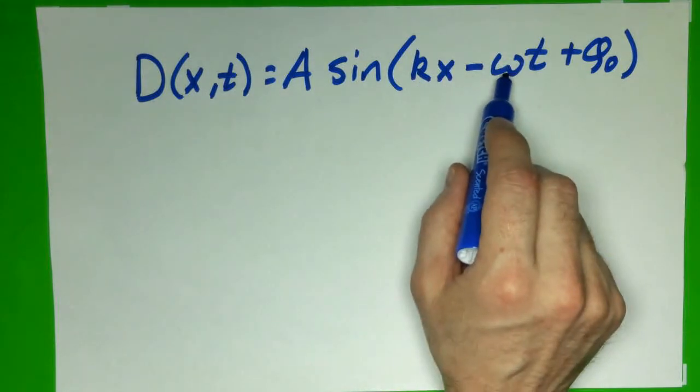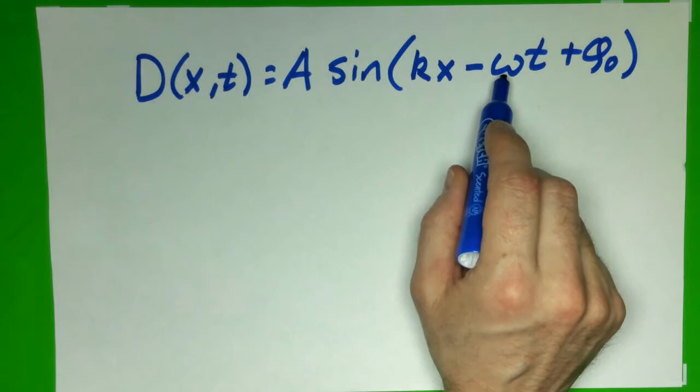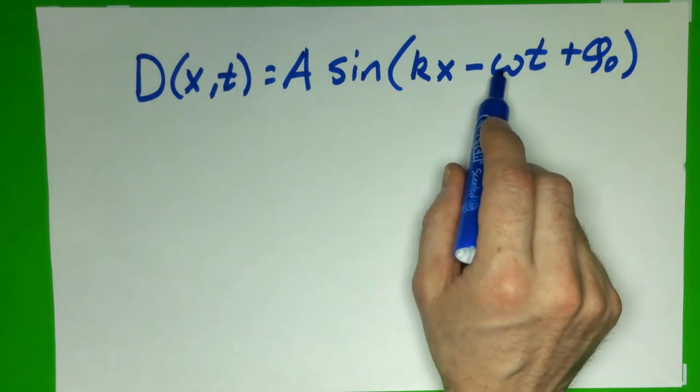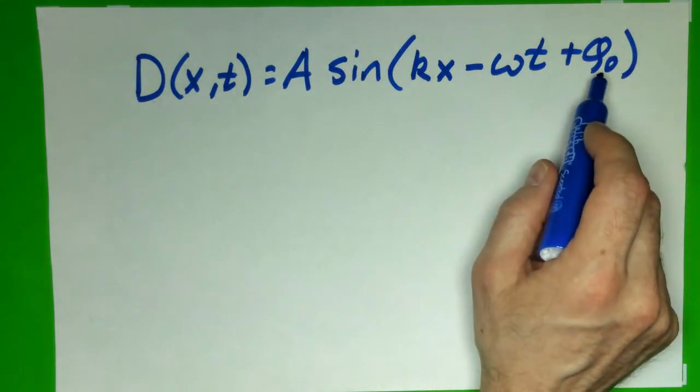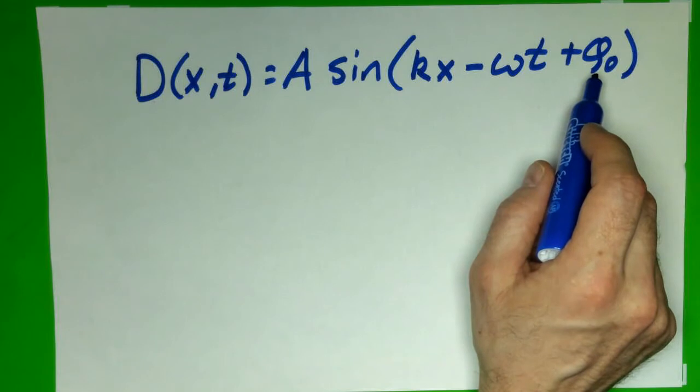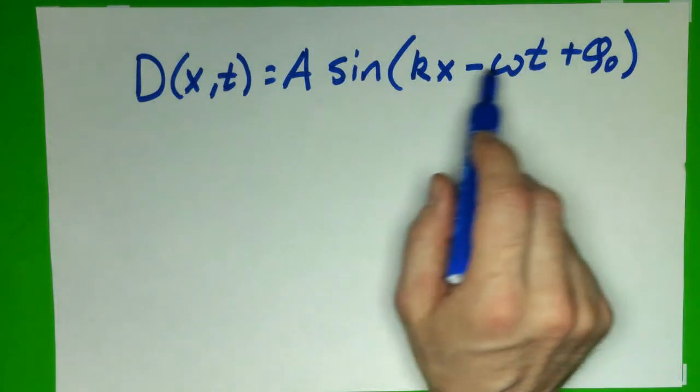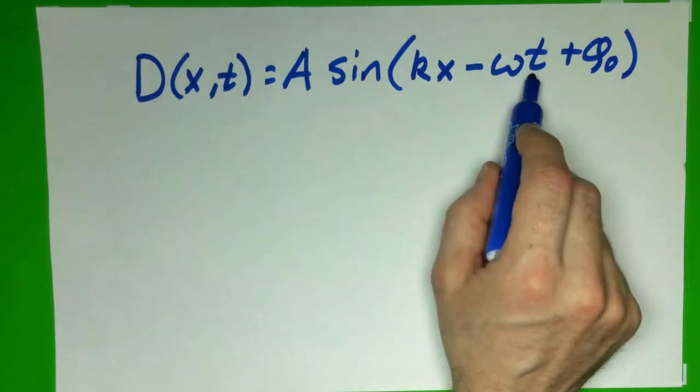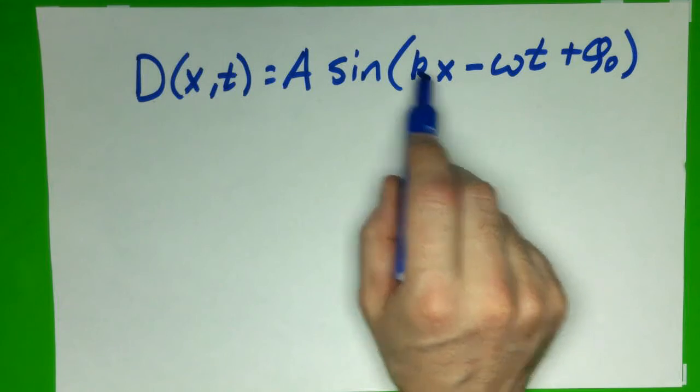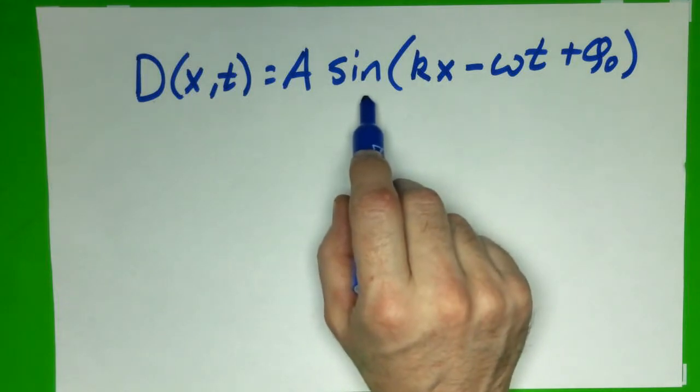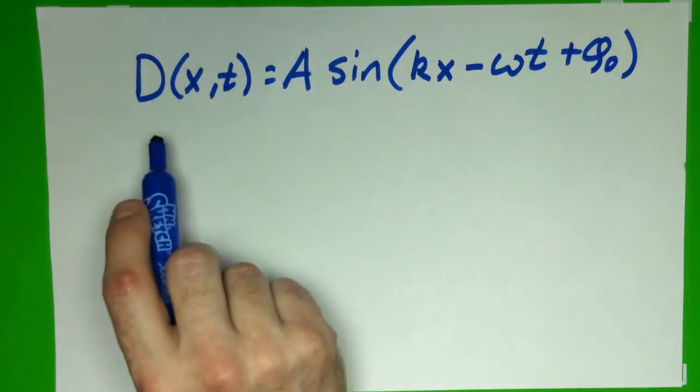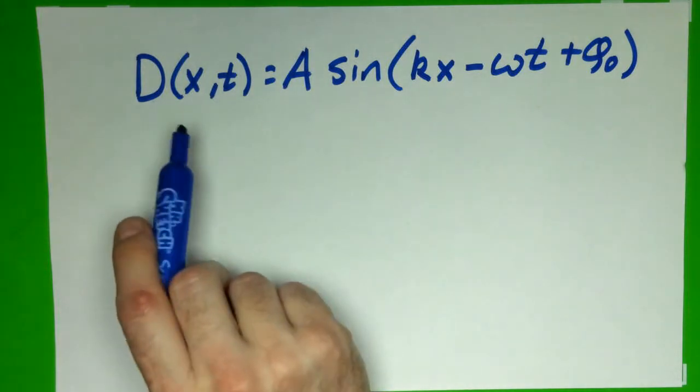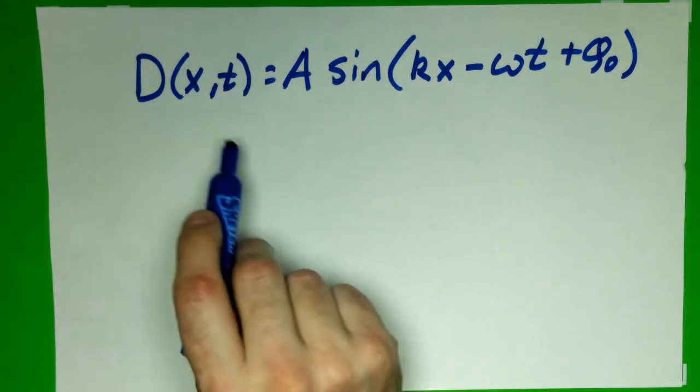And then this is the angular frequency ω, which is related to the regular frequency, just changing it to a radian value, so it's 2πf or 2π over the period. And then this φ₀ is how the wave starts, or at least when we start our time, what position is the wave in. If this were zero and we're looking at the origin, at zero time, then this would be a pure sine wave, which means it's coming out of the origin going upward. The important thing here is to recognize this is describing all the particles that make up the wave.